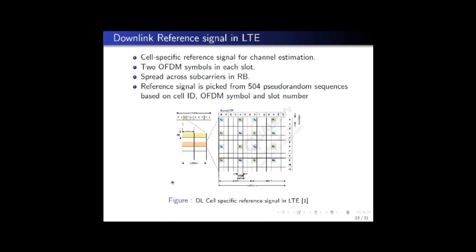Let's talk about the downlink reference signal in LTE. Downlink reference signal, as we discussed earlier, is the pilot symbol which is used in LTE. The cell specific reference signal is used for channel estimation.